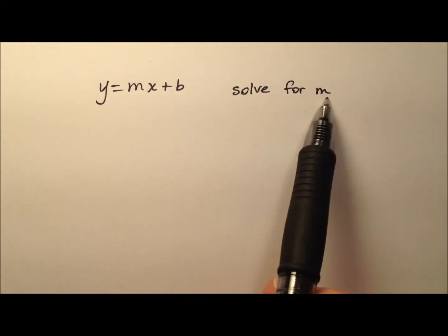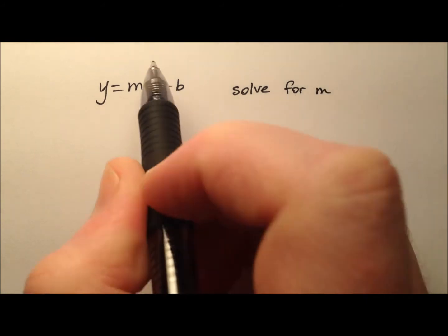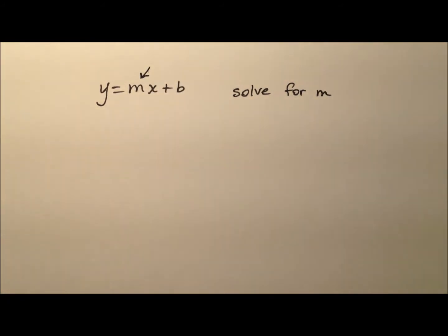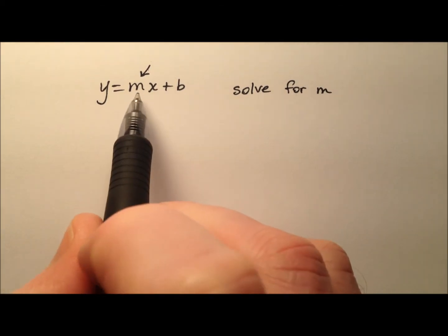Okay, so what we want to do here is solve for m. We would like to get this variable m and isolate it on one side of the equation, all by itself. And so how can we do that?